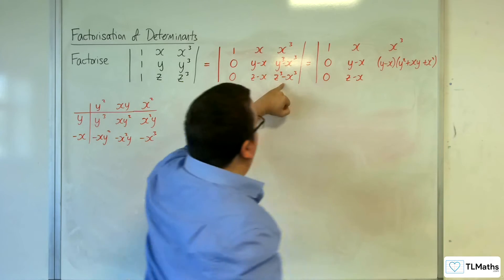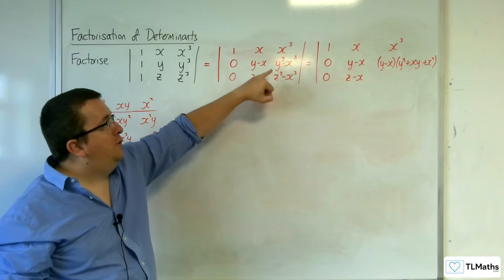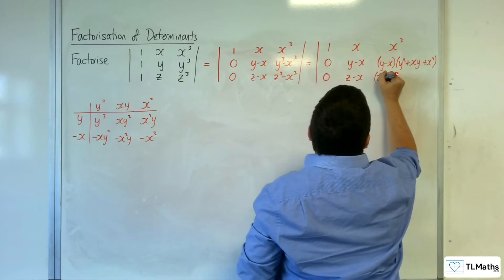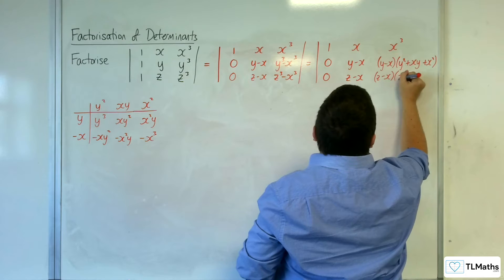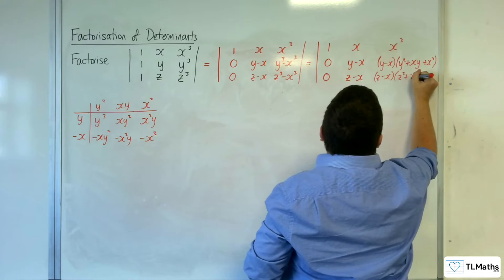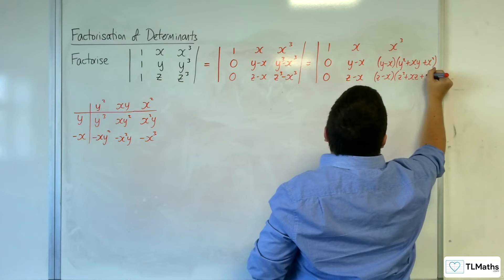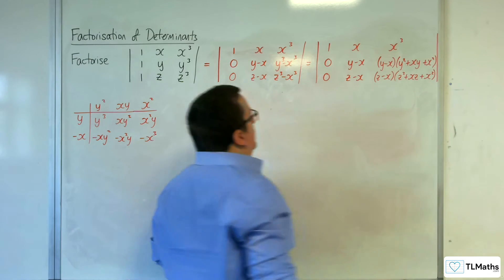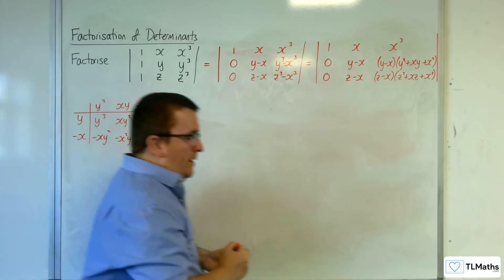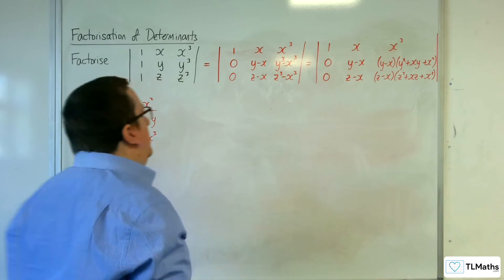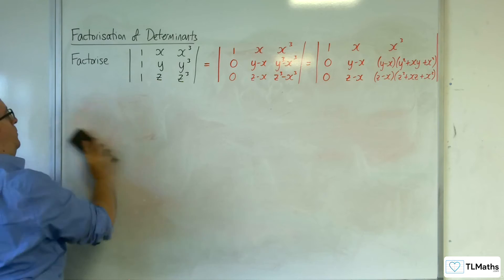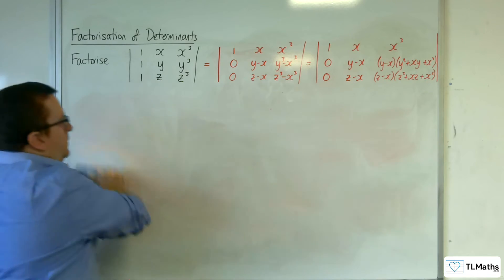Now, it's exactly the same algebraic process, just the y's been replaced with z in that bottom row. So, I can write that as z take away x, z squared plus xz plus x squared. So, I'm just going to erase that bit of working now.